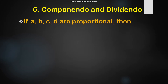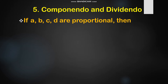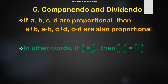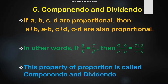The fifth and last property is componendo and dividendo. If A, B, C, D are proportional, then A plus B, A minus B, C plus D, C minus D are also proportional. In other words, if A ratio B is proportional to C ratio D, then A plus B ratio A minus B is proportional to C plus D ratio C minus D. The denominator is added to the numerator and also subtracted from the numerator, giving A plus B and A minus B, and similarly C plus D and C minus D.